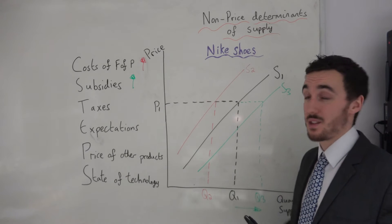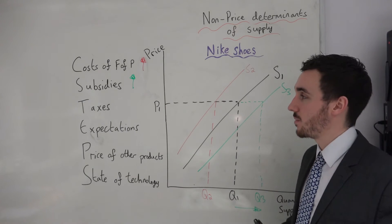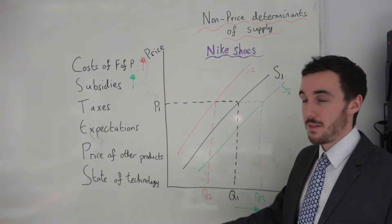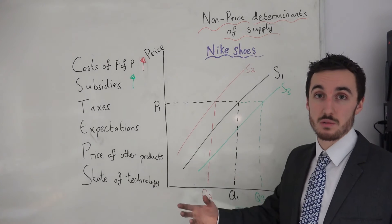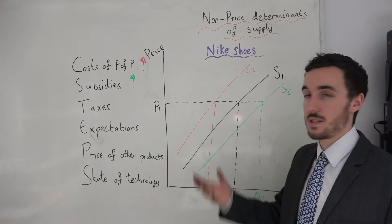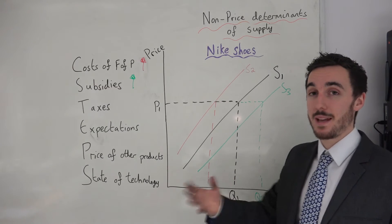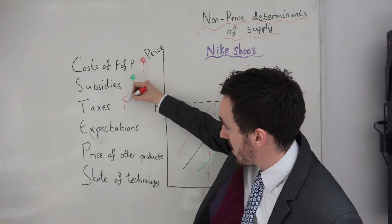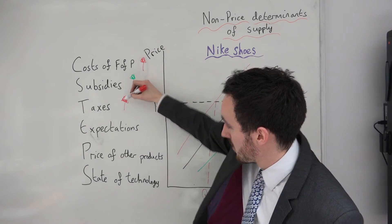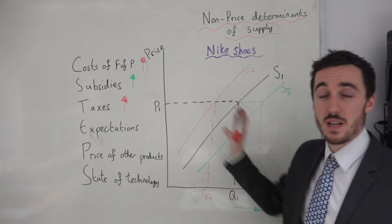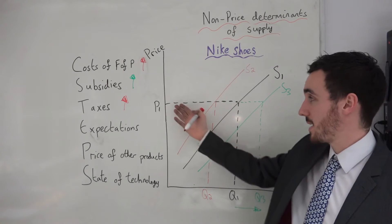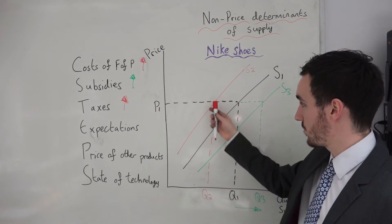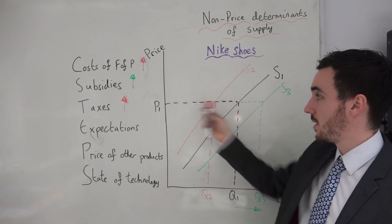What about taxes? Taxes are the opposite of subsidies in some ways. The government is now taxing the firm, meaning the firm has more costs — taxes are money that the firm has to pay to the government. If taxes have gone up then their costs are higher, and so their supply curve shifts inwards. They are unable at the same price level to produce the previous quantity and now have to produce at Q2 at P1.